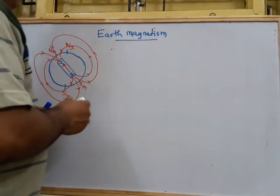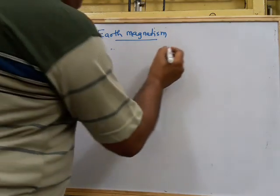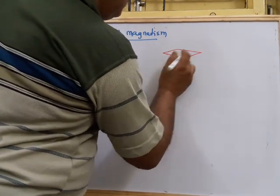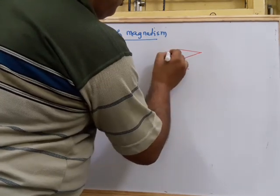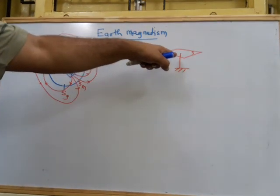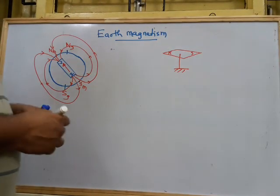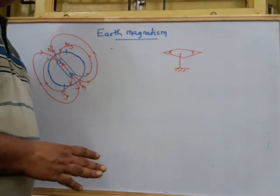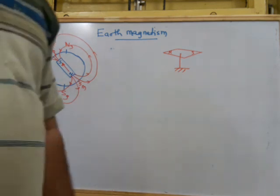The next concept is the angle of inclination, also called the angle of dip. The angle of dip means: consider a magnetic compass that can freely rotate about a point. If you place this magnetic compass at a location on Earth, in the next video I will explain all these things in detail.